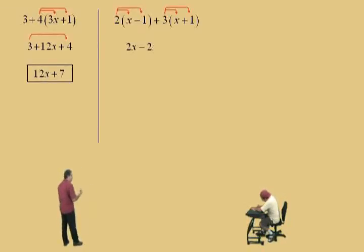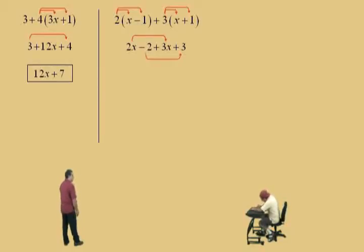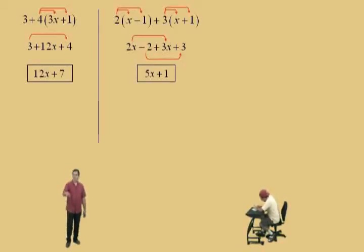2x subtract 2 plus 3x plus 3. You getting this, Charlie? Yeah, you better get it or you're going to get it. Anyway, here we go, Charlie. Let's combine our like terms. We have the 2x and the 3x and the negative 2 and the plus 3. And so, what's 2x plus 3x, Charlie? 5x. Negative 2 plus 3? 1. Very nice. And go ahead and box your answer. There you go.